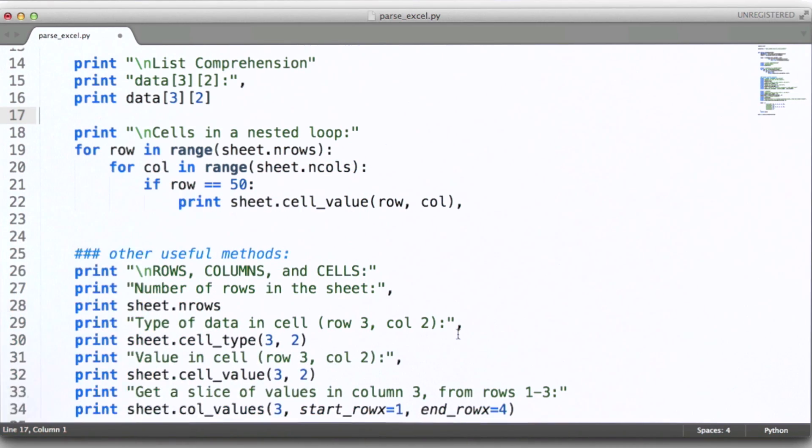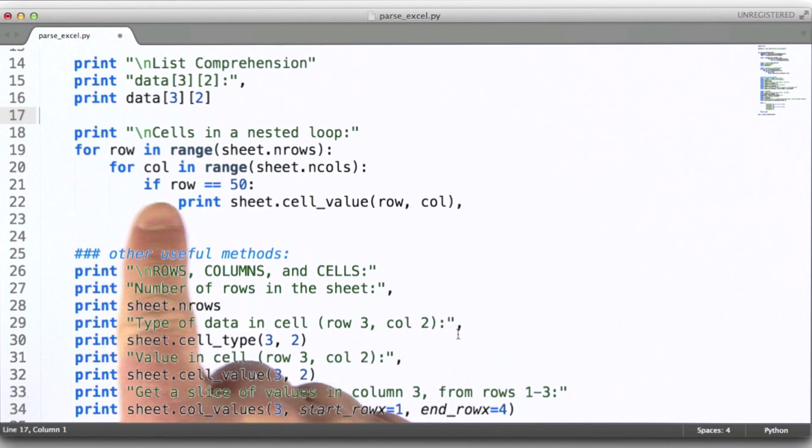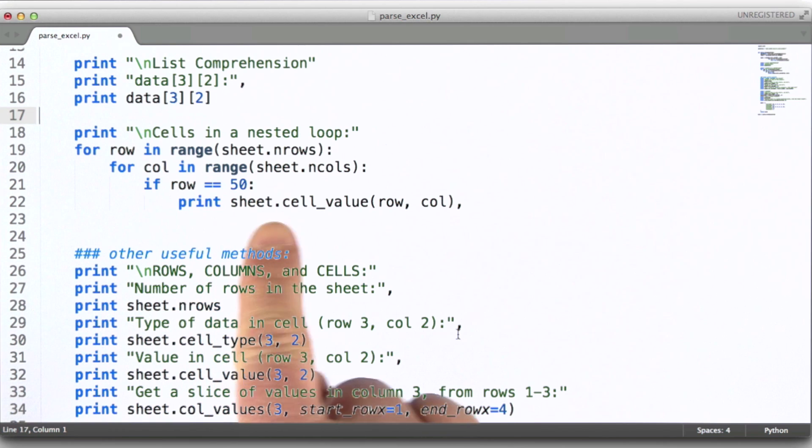And the way I've set this up is that once we get to row 50, what we're going to do is essentially print out all of the values in that particular row, one column at a time.